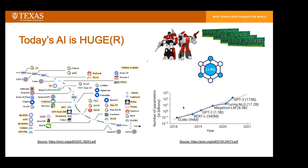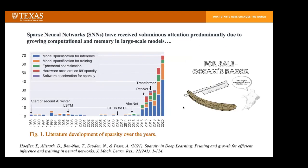These big models create a lot of practical pressure to compress. Compression methods include quantization, pruning, and knowledge distillation. I only truly understand one of them — pruning. Pruning is close to my heart because, like many people here, I grew up with a signal processing background. Much of my PhD research was about L1 minimization, gradient descent, and projected gradient descent.